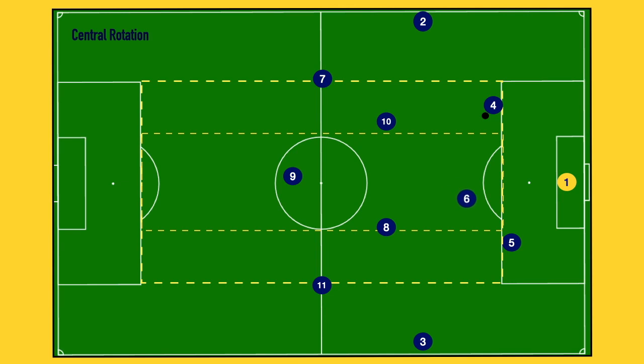The six typically, as we ask them in our team, moves opposite of where the ball is located. So if the four is on the ball, the six slides down to create an angle to receive and face forward. You could say the six is in a similar position to where the five is located, but we'd rather have our six on the ball making decisions versus our five.